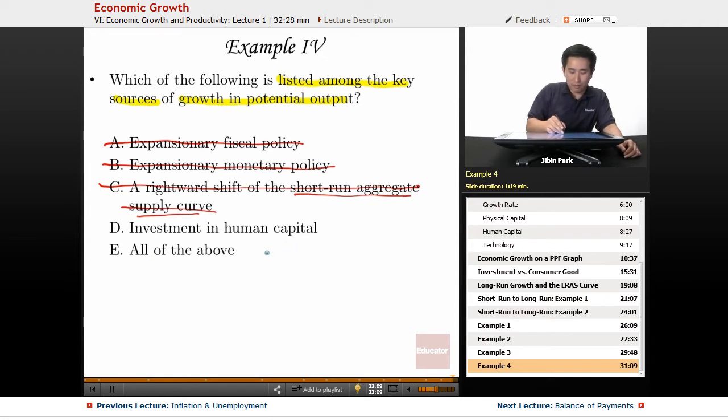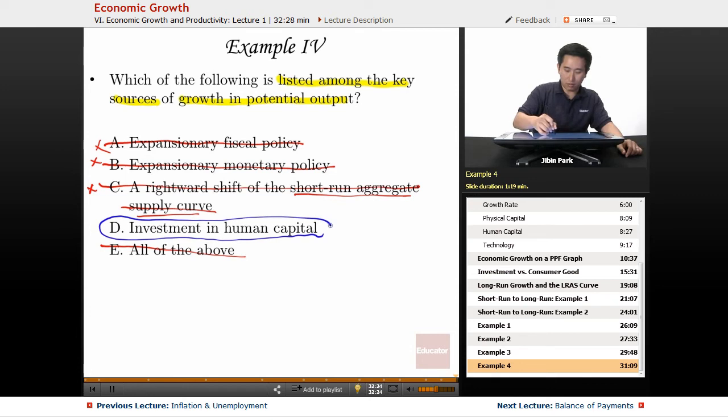Investment in human capital or all of the above? Well, we know all of the above has to be incorrect because we've proven A, B, and C are actually incorrect. So investment in human capital is absolutely what's going to increase long-run economic growth.